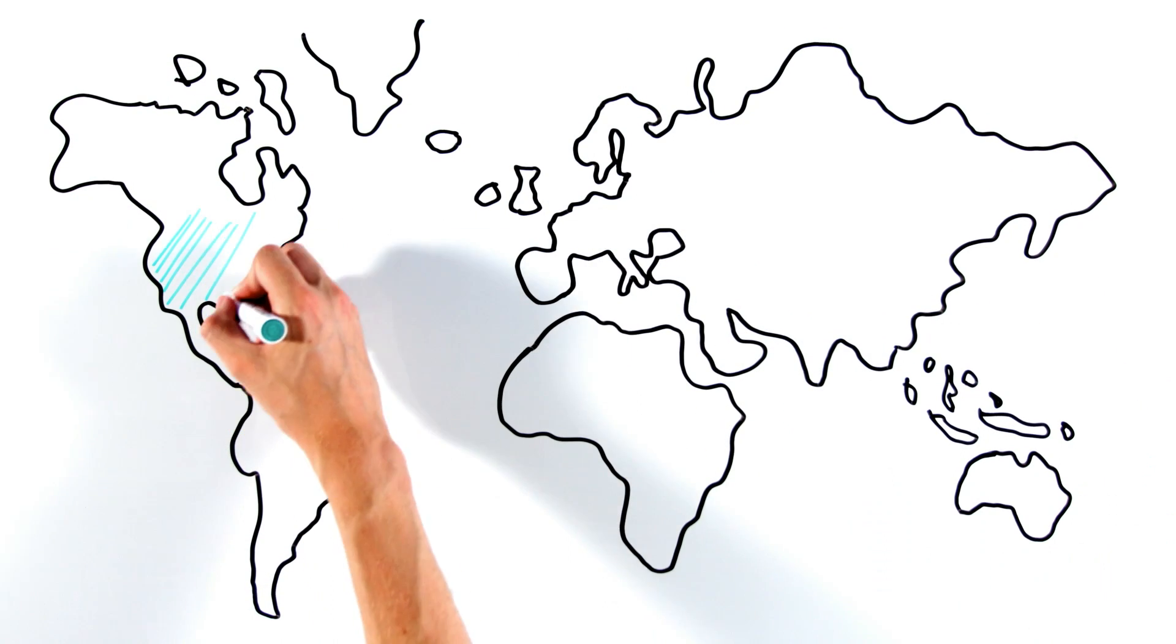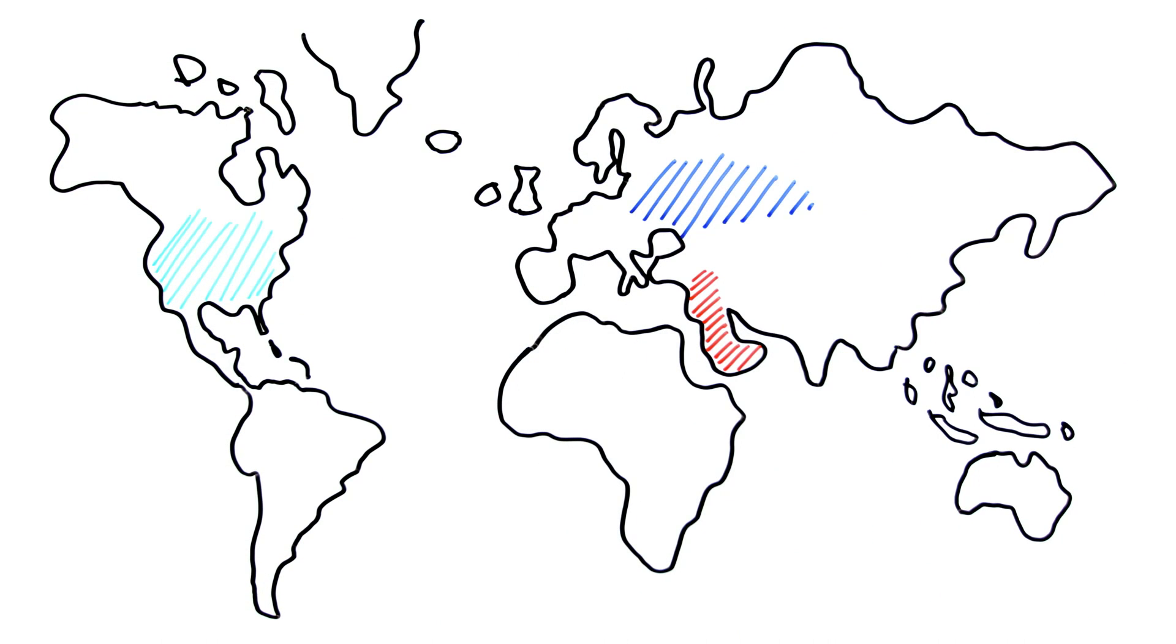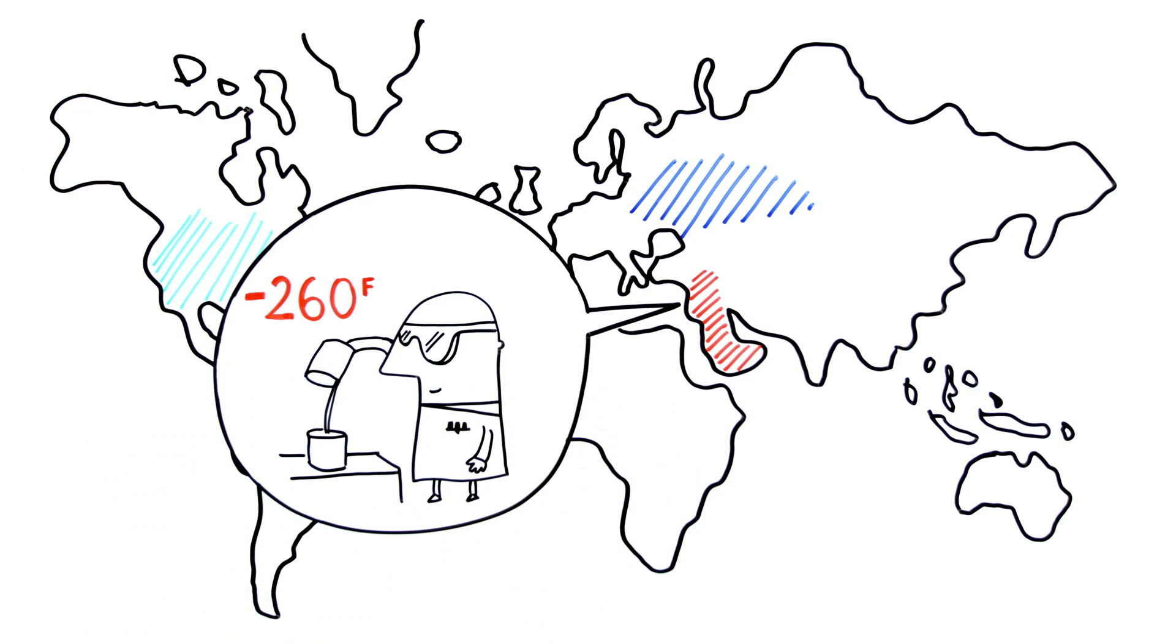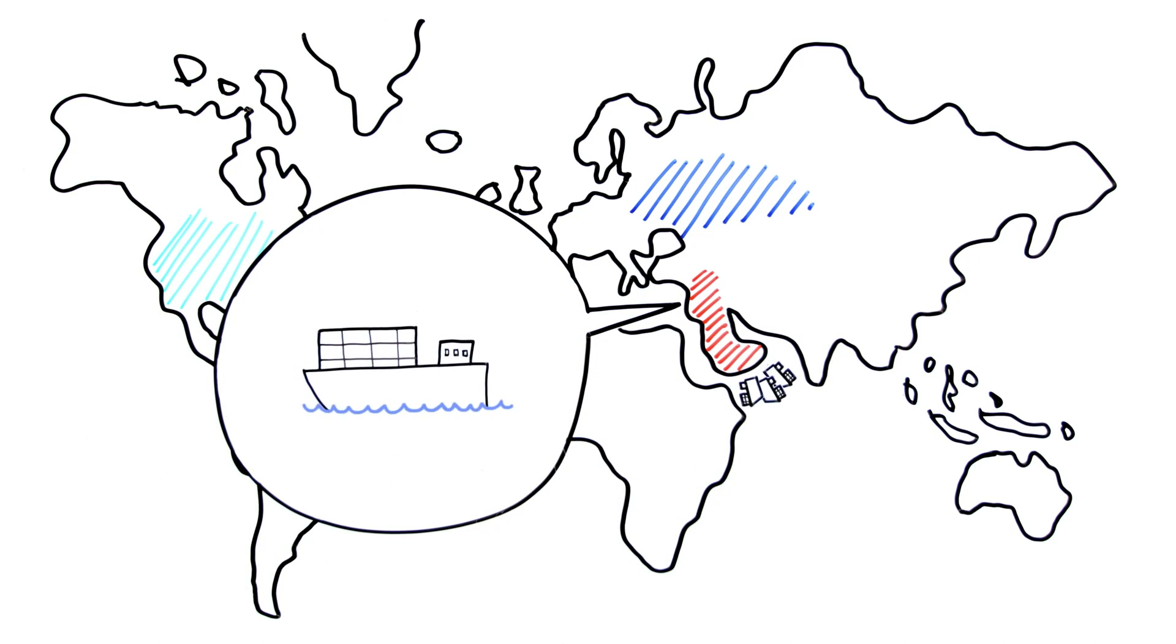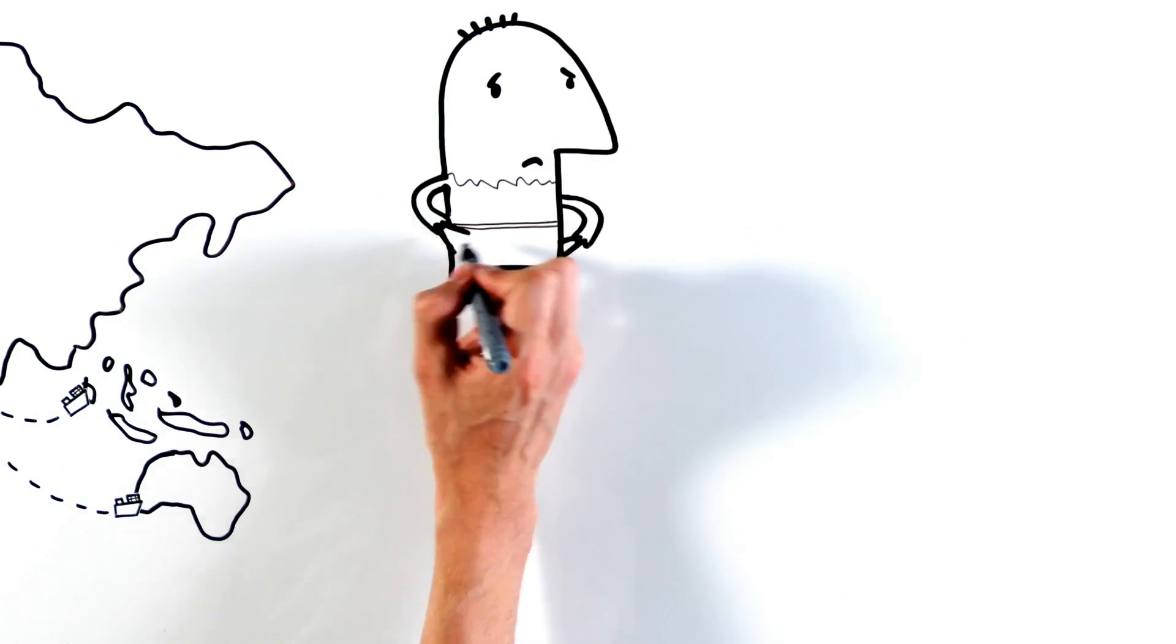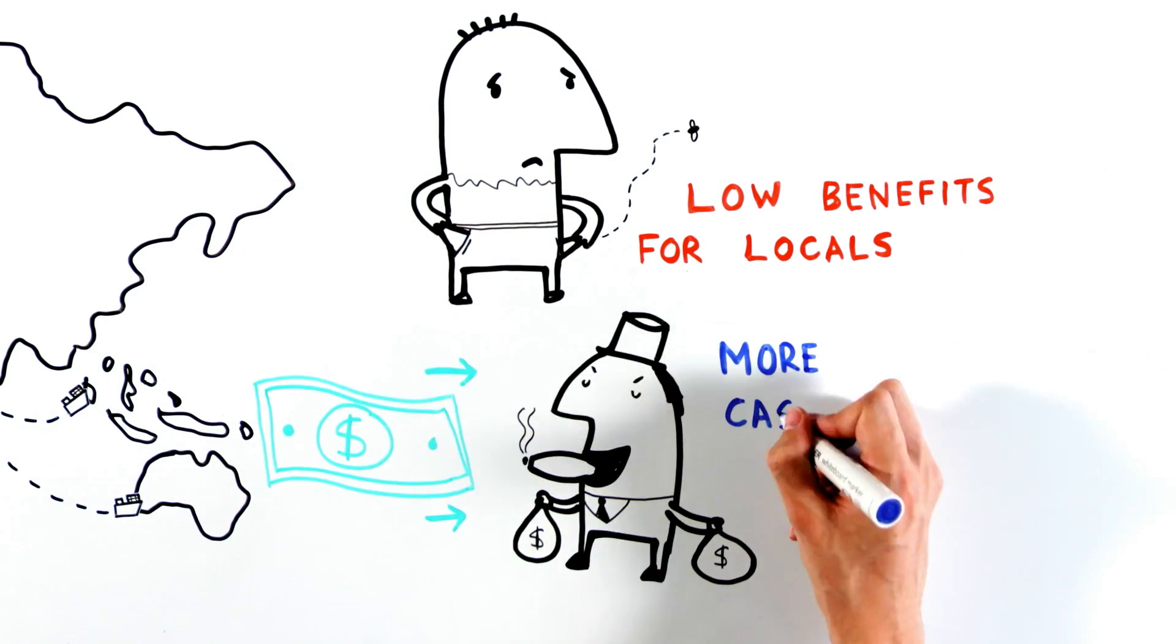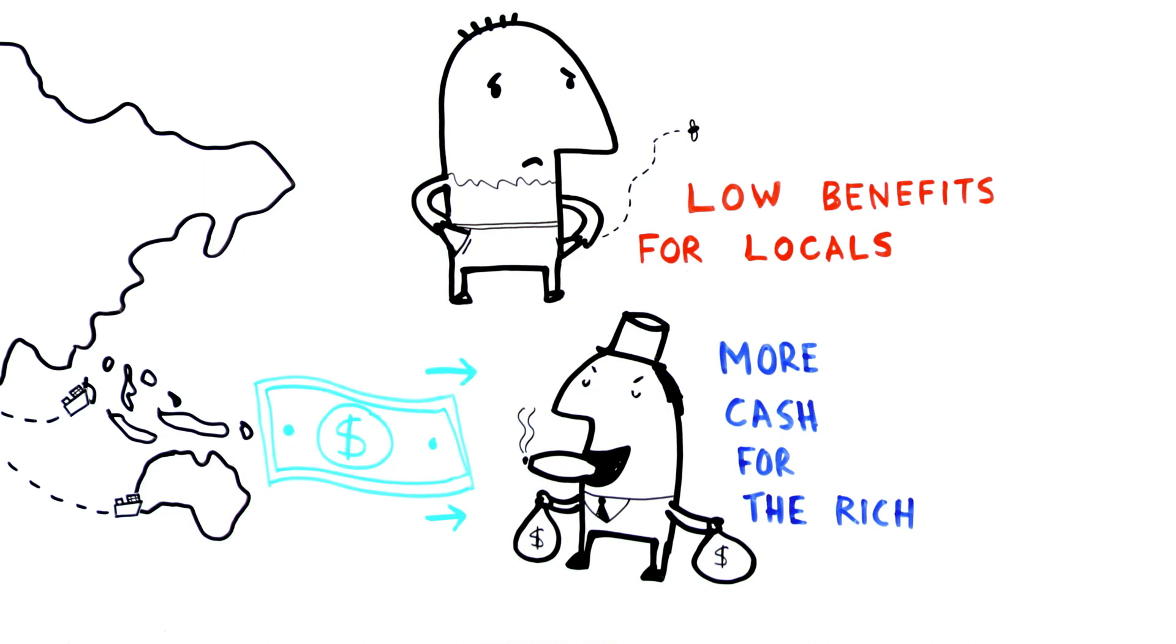Some more distant countries also have huge natural gas reserves, which are turned into a liquid to transport overseas. But the UK isn't the only country that wants to get its hands on this gas, so there's competition for shipments. What's more, revenues from selling a country's fuel rarely benefit its local people. Instead, profits often line the pockets of wealthy shareholders.